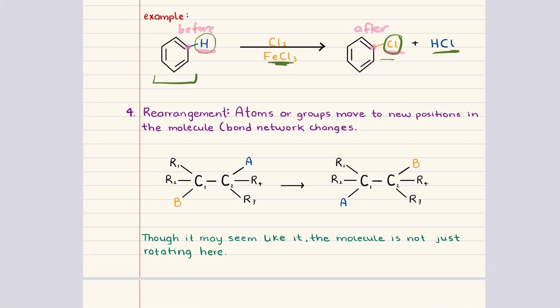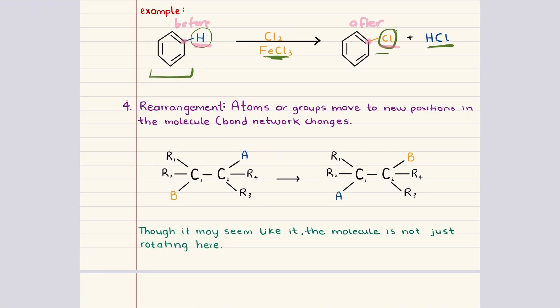After substitution, the fourth major category is rearrangement. Rearrangement reactions are quite different from the others because the atoms are not being added, removed, or swapped. Instead, the connectivity within the molecule changes. Atoms or groups migrate into new positions, which means the bond network is reorganized. This is not a simple rotation or a flipping of the molecule. Bonds are being broken, and new bonds are formed.